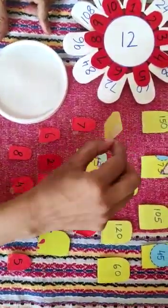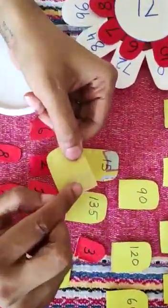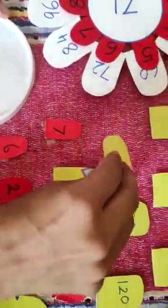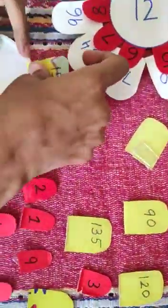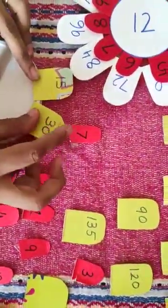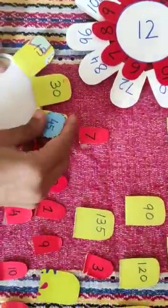Now, with the help of cello tape, I will roll the cello tape here in each petal and I will stick it. So, first is 15, 30, 45.